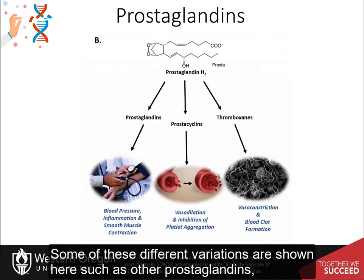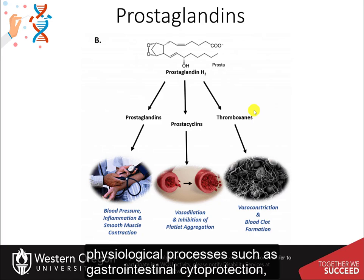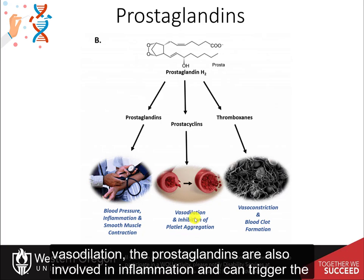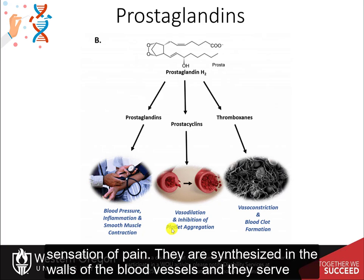Prostaglandin H2 may then be modified by additional enzymes. Some of these different variations are shown here, such as other prostaglandins, the prostacyclins, and the thromboxanes. Prostaglandins are implicated in various physiological processes, such as gastrointestinal cytoprotection, hemostasis and thrombosis, as well as renal hemodynamics. Through their role in vasodilation, prostaglandins are also involved in inflammation and can trigger the onset of a fever or the sensation of pain.